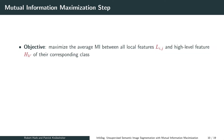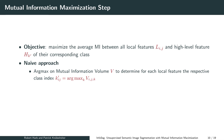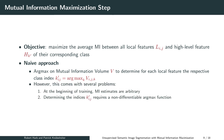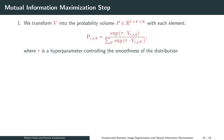After discussing the segmentation step, we will now explain how the mutual information maximization step is performed. In essence, we want to maximize the average mutual information between all local features and the high-level feature of their corresponding class. A naive approach might use an argmax on the mutual information volume to determine for each local feature the respective class index. However, this comes with several problems. When we start training, the mutual information estimates are completely arbitrary due to random network initialization. Relying entirely on them by making hard assignments using an argmax reinforces incorrect predictions. Moreover, the argmax operation is also non-differentiable. To tackle these problems, we perform soft assignments instead of hard assignments during the mutual information maximization step.